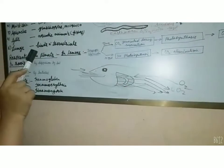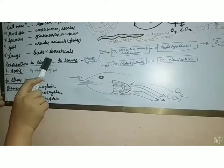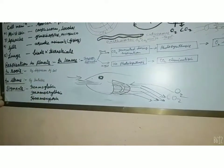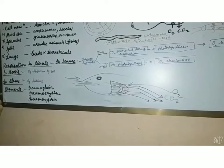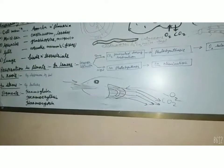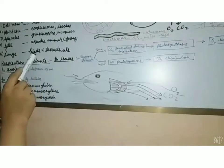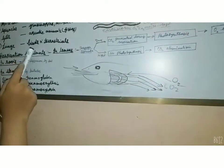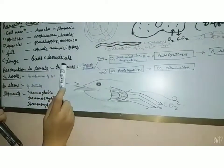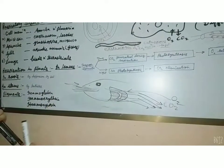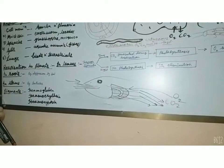Lungs are present in higher animals such as birds and mammals. In birds, air sacs are also present which help in storing large amounts of air during flight. With the help of lungs and air sacs, birds can breathe, and higher animals such as human beings have a well-developed respiratory system through which they can exchange gases for obtaining energy.